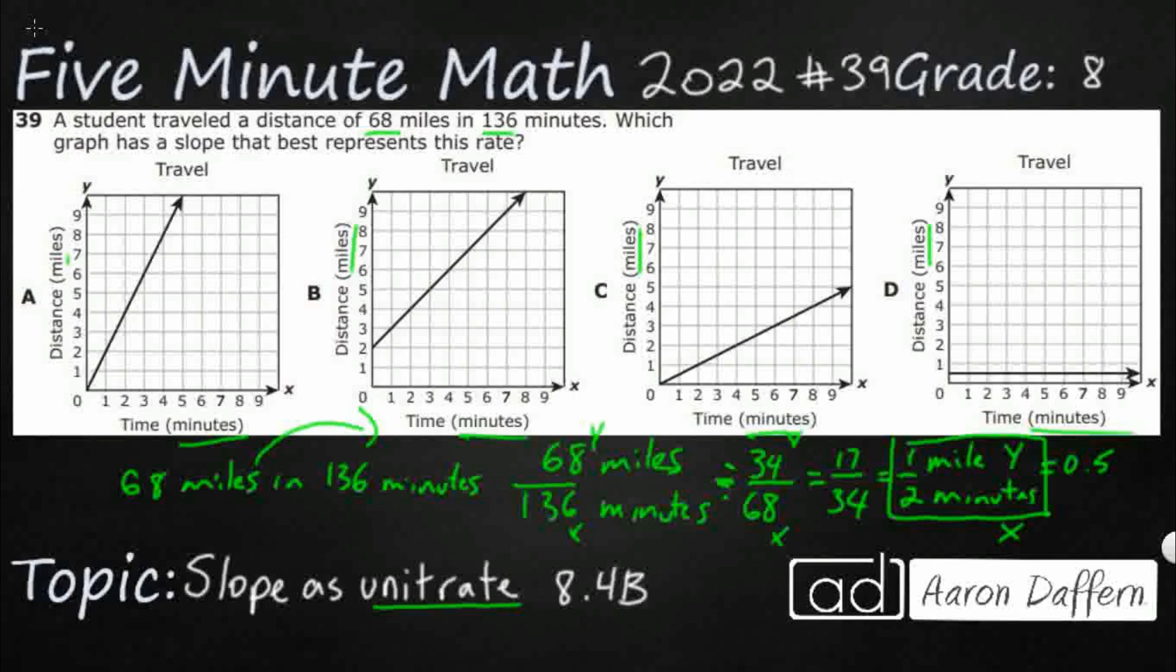So we can find a point of two minutes x to one mile y. And then if we wanted to use that rate, we could double that. We could say four minutes x to two miles distance on the y, and so on and so forth. Let's take a look.